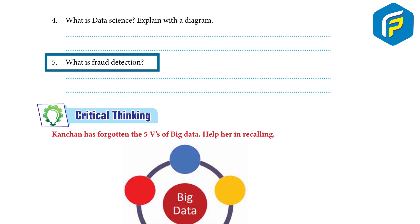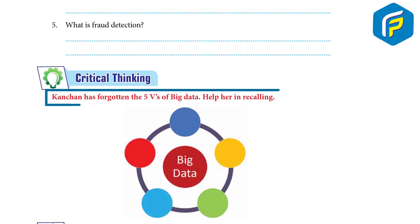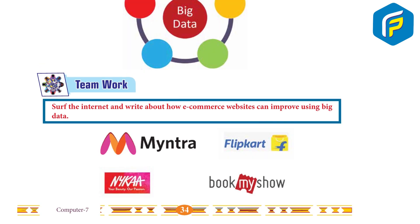Critical thinking: content has forgotten the five V's of big data — help her recall them. Also, write about how e-commerce websites can improve using big data. Answer: ask students to do it by themselves.